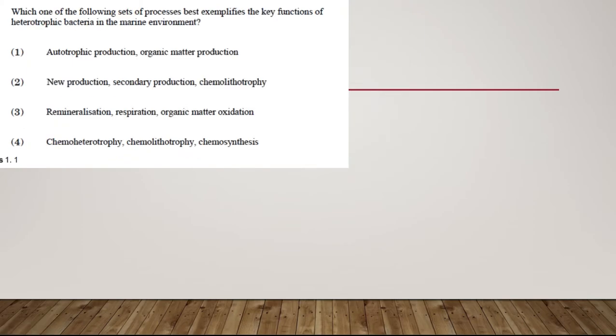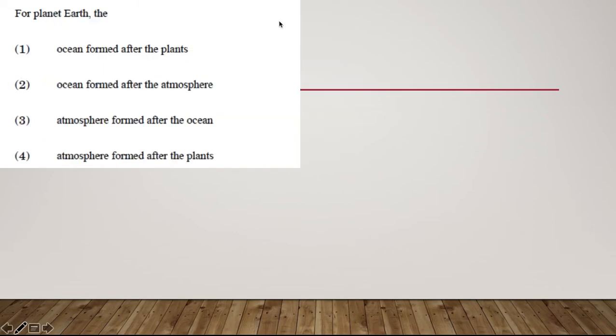Next question: Which set of approaches best exemplifies the key function of heterotrophic bacteria in the marine environment? The right answer is three. Remineralization is when bacteria consumes dissolved organic matter and brings about remineralization of nutrients like carbon, phosphorus, and nitrogen back to water. Respiration - we generate energy during this process. Organic matter oxidation is basically decomposition of organic matter. These are all key functions of heterotrophic bacteria.